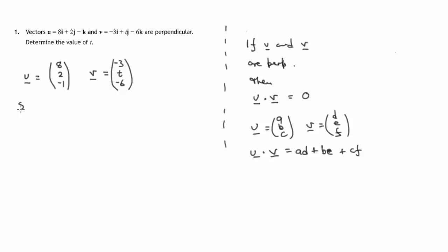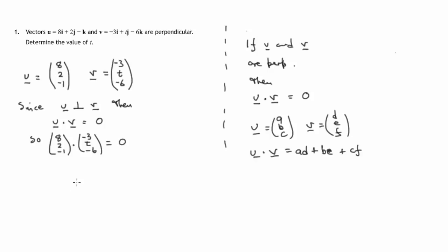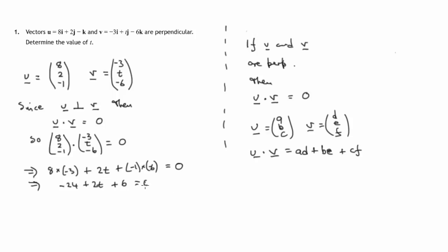So in this case, since vector u is perpendicular to vector v, u dot v will be equal to zero. Multiplying the corresponding components: 8 times negative 3 for the x components, 2 times t for the y components, and negative 1 times negative 6 for the z components — that all comes to zero since the vectors are perpendicular. So that's negative 24 plus 2t plus 6 equals zero.